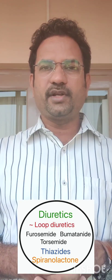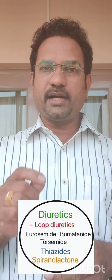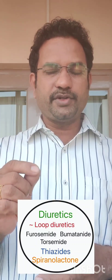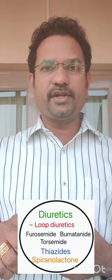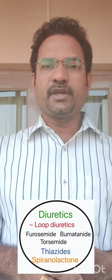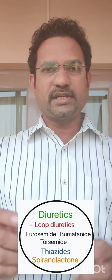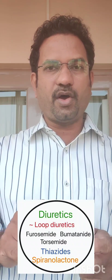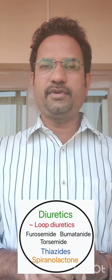The major problem in congestive heart failure is congestion or blood pooling in organs. This can be addressed by using diuretics. Diuretics reduce blood volume and reduce congestion. Especially high ceiling diuretics or loop diuretics are used — furosemide, torsemide, fumetamide-like drugs. But chronic use of loop diuretics may cause tolerance. To reduce tolerance, loop diuretics are used along with thiazide diuretics or potassium-sparing diuretics like spironolactone.